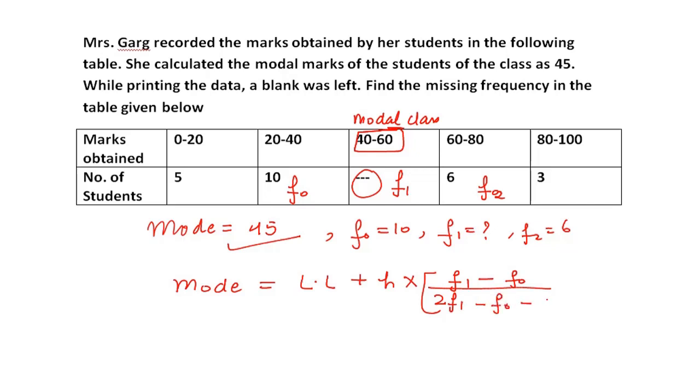So yes, this is the formula. Now putting all the values. Mode ki value is 45. Lower limit is 40, because the modal class lower limit is 40. h is 20. Then in bracket you have F1 minus F0, which is 10, divided by 2 into F1, so 2F1 minus F0, which is 10, minus F2, which is 6.